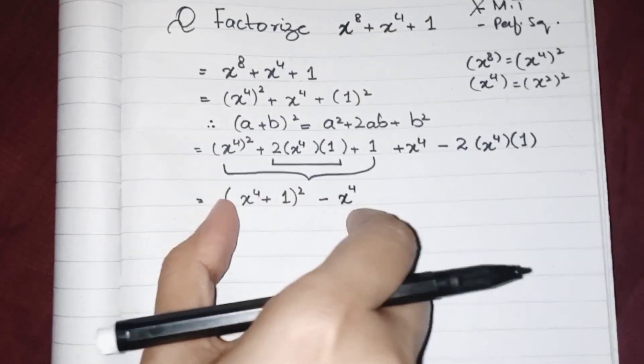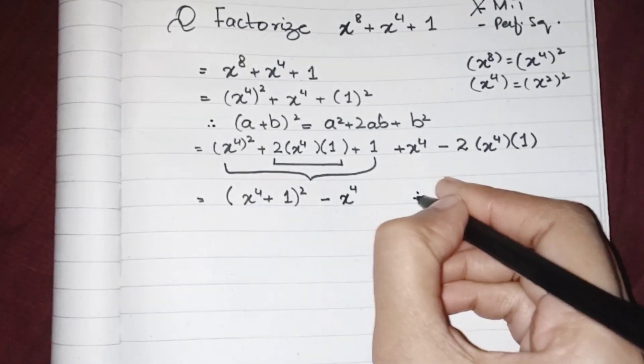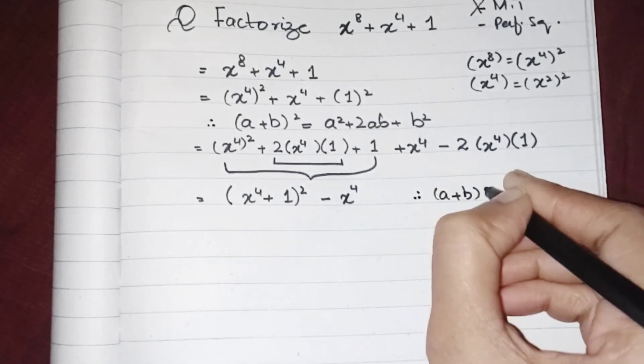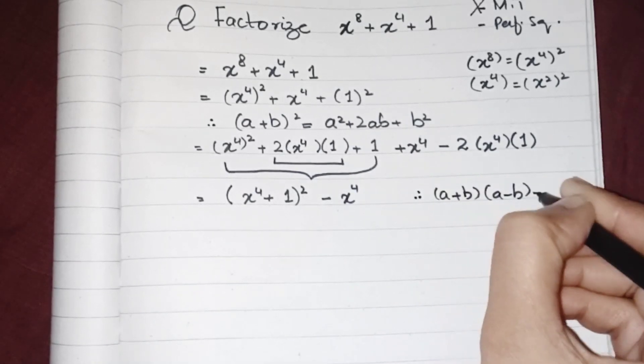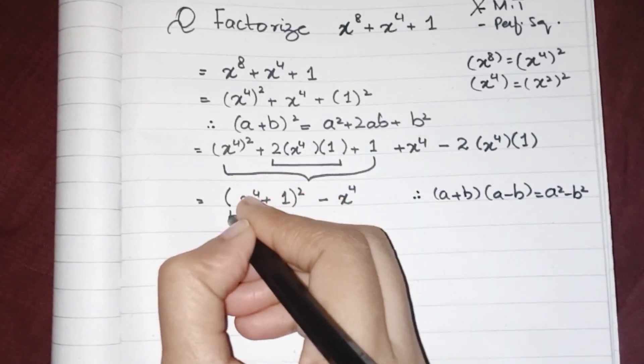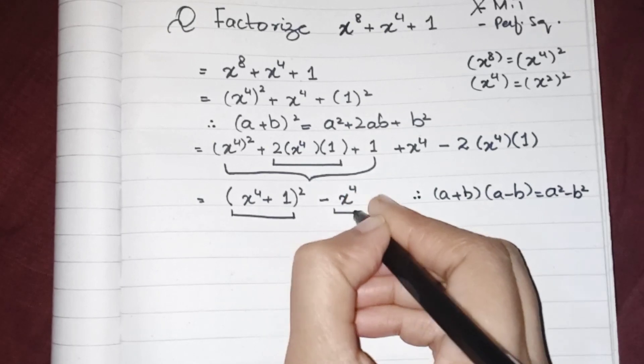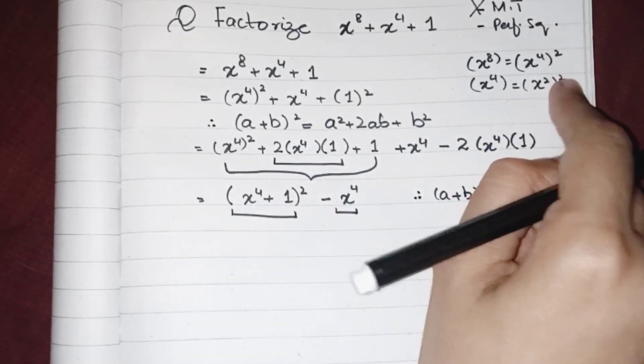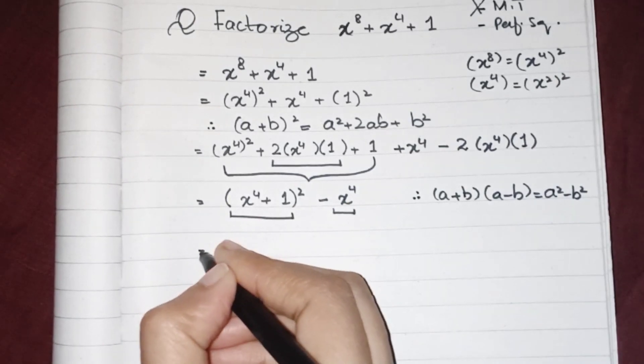Now this one is again a formula: a plus b and a minus b should equal a^2 minus b^2. This one is my a^2 and this one is b^2. As we know, x^4 equals (x^2)^2, so we can write it like...